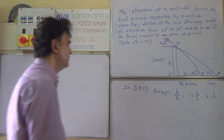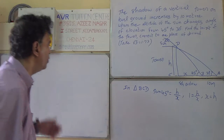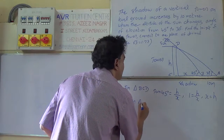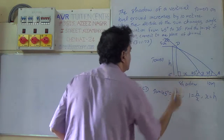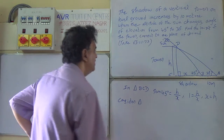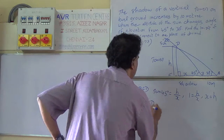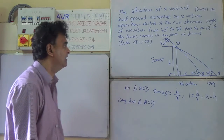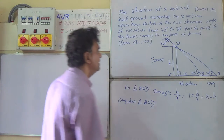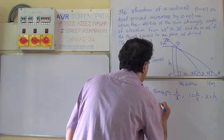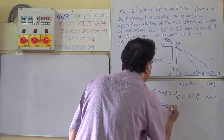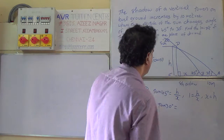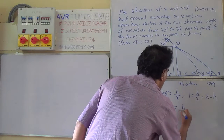Now consider right triangle ACD. The angle at this triangle is 30 degrees. Tan 30 equals the opposite side, which is the same H.